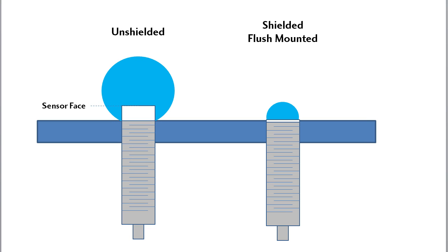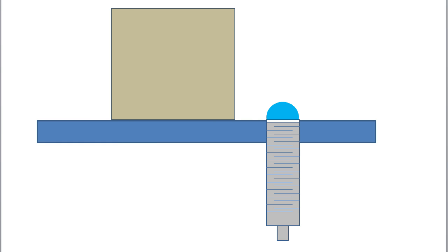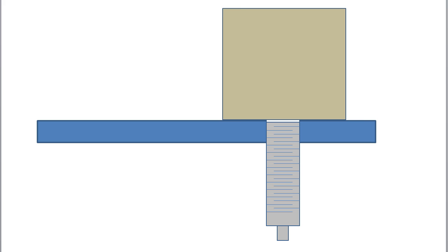So when you flush mount one of these in a metal bracket, you are actually choking out a portion of the sensing region and reducing the range. That's usually not a big deal because if you are flush mounting a sensor it's probably because the object is sliding right over the sensor so distance isn't a big issue.